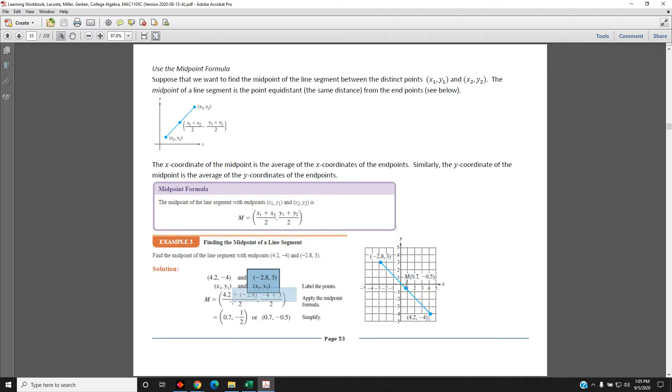We write our formula and we leave space for the x1, x2, y1, and y2, then plug them in. So, x1 is this 4.2 value. x2 is this negative 2.8 value. y1 is this negative 4 value. And y2 is this 3 value.